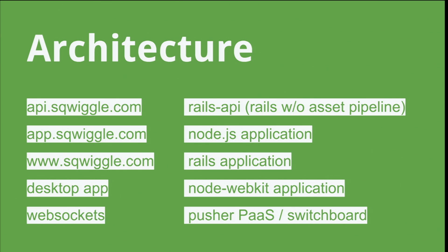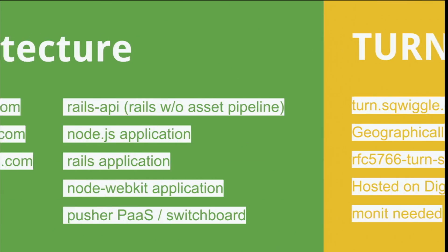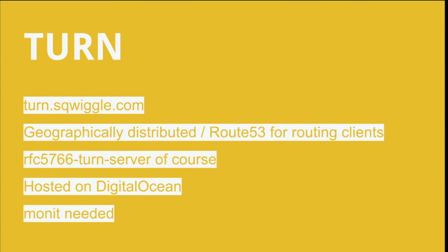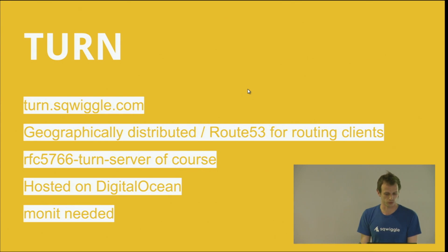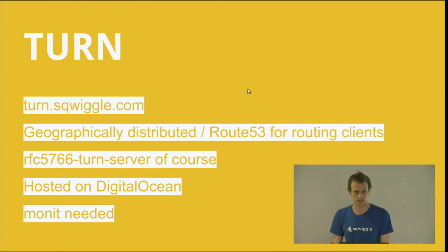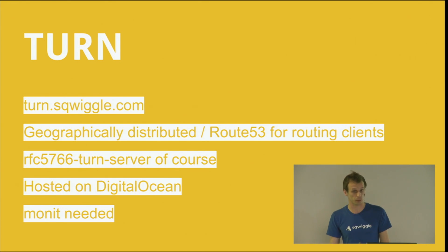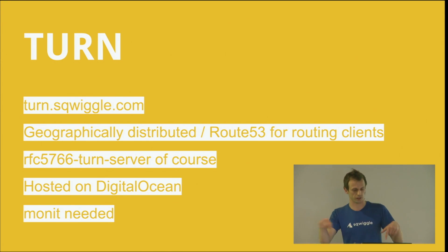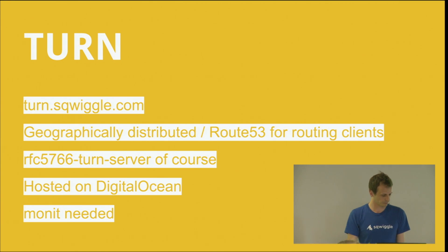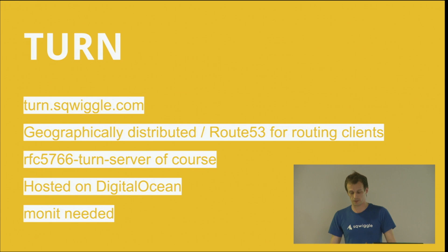We've used Switchboard when changing between versions of Squiggle. For TURN, we did the same thing — we have a domain, turn.squiggle.com, and if you hit that up it will give you your closest geographically located TURN server. We use Route 53, Amazon's DNS server, which has latency-based routing built in. We use the RFC 5766 TURN server, which I think most people use — it's very solid. We have these hosted on DigitalOcean instead of Amazon, and we found that the bandwidth is more than sufficient across many little DigitalOcean boxes, in all of DigitalOcean's locations: Singapore, Amsterdam, New York, and here.